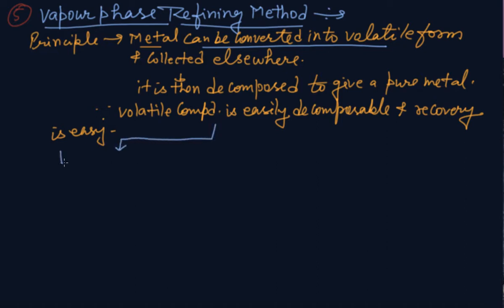One is Van Arkel method and another is Mond process. Whenever reaction is there, you must write the reaction. The principle of vapor phase refining method has been asked, zone refining has been asked, and chromatography has been asked. In this reaction, Mond stands for M, and in ABCD after M, N will come. So it is done for nickel.